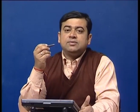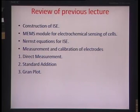We discussed MEMS modules for electrochemical sensing of cells, showing a small silicon chip with 64 recording channels for single-cell isolation and electrode recording. Then we derived the famous Nernst equation, which describes the relationship between the EMF and the log of concentration. The Nernst slope is equivalent to a parameter S, which is 0.059 divided by N, where N is the number of electrons exchanged in the redox couple.